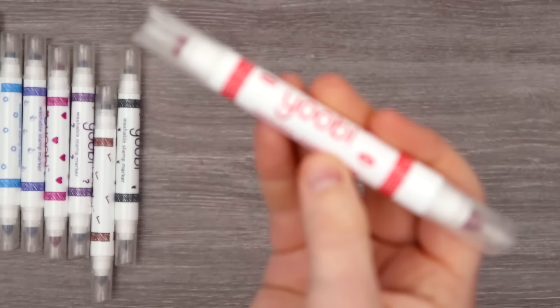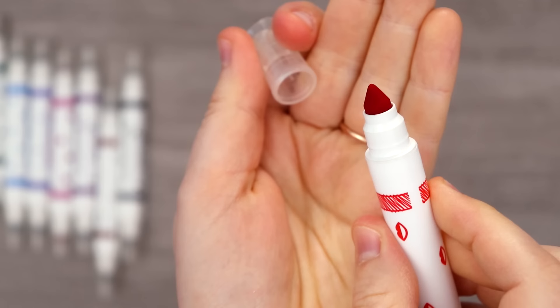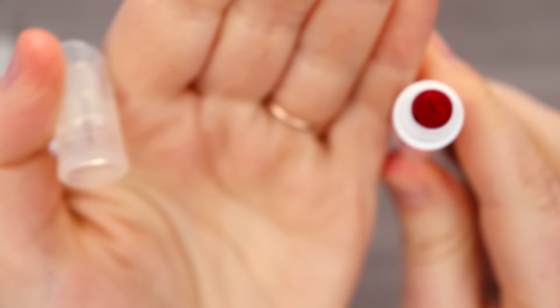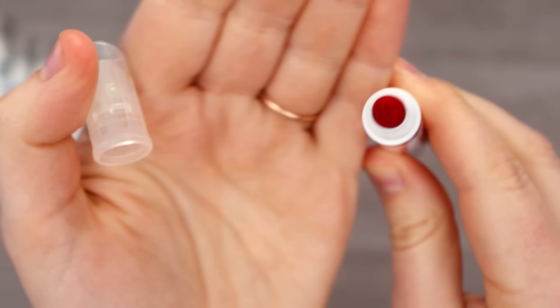If you don't know what a double-ended stamp marker is, let me show you. Basically, it is a marker that is double-ended. It has a regular fat marker that you would expect from kids' art supplies on one side, and the other side we have a stamp.